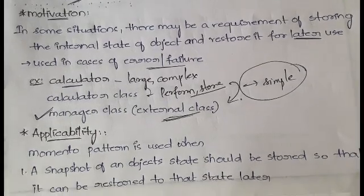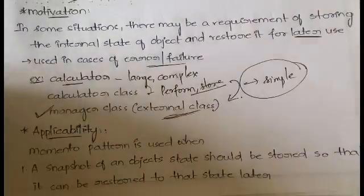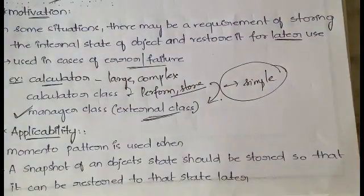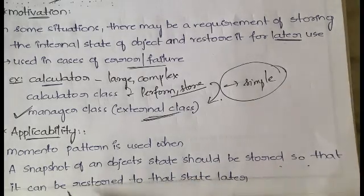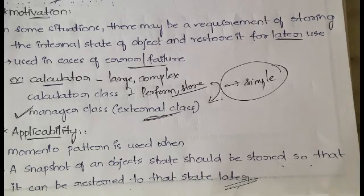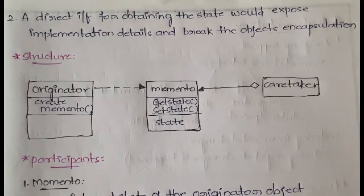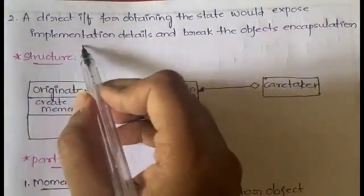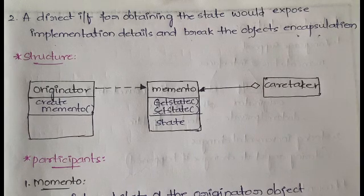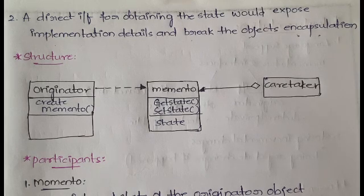What are the applicabilities — the situations where you can use this pattern? You can use the Memento pattern when a snapshot of an object's state should be stored so that it can be restored to that state later. Whenever you need to store the current state of an object for future use or in case of errors or failures, you can use this pattern. Also, when a direct interface for obtaining the state would expose implementation details and break the object's encapsulation, this pattern applies.